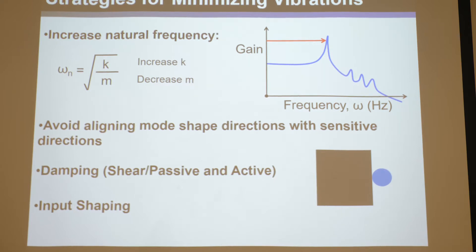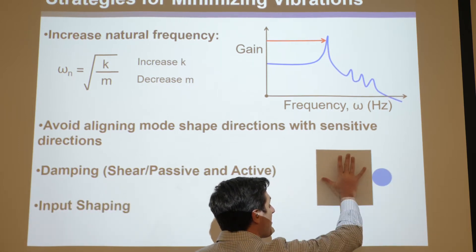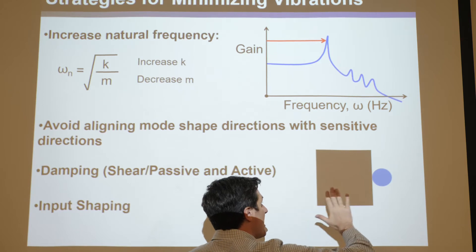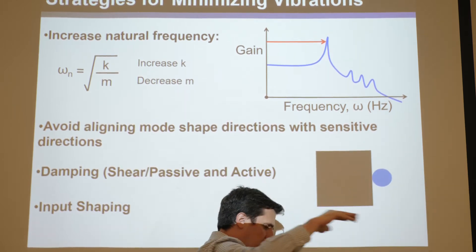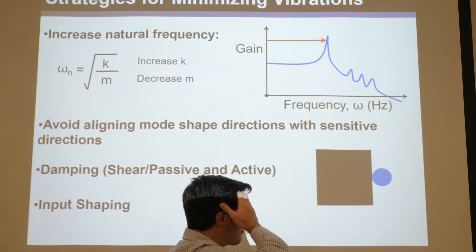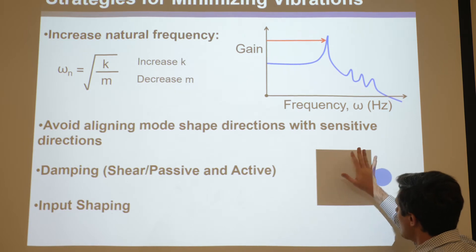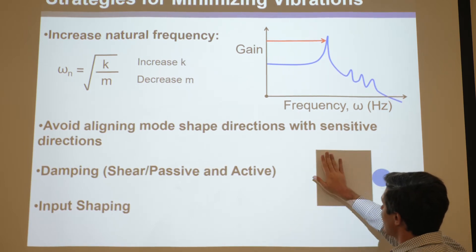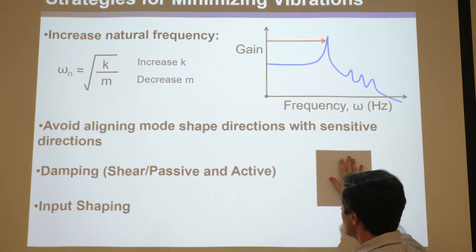Another thing is avoid aligning mode shape directions with sensitive directions. Say this little blue dot is an atom, and say we have a stage here that's much larger, and it's supposed to like push this atom and move it. That's a really ambitious thing, to grab and push an atom, or say this is a little bit larger than an atom but it's still really small.